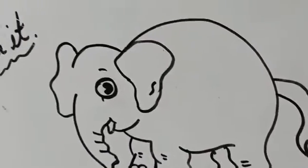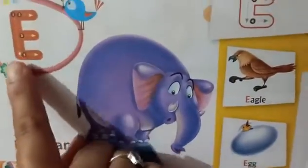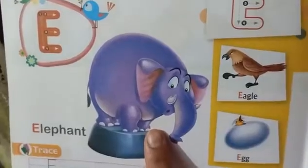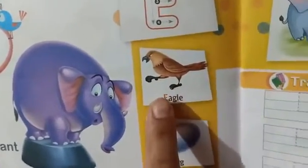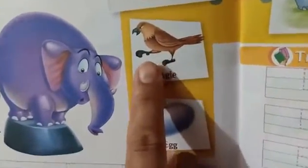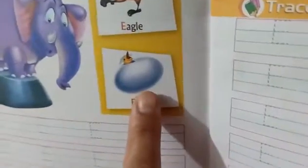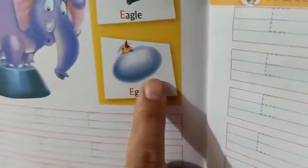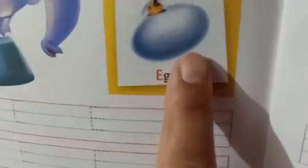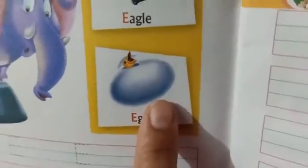Elephant. And another — E for eagle. Next, E for egg. And can you tell me what is this? E for elephant. E for eagle. Okay, this is your book, your school book.